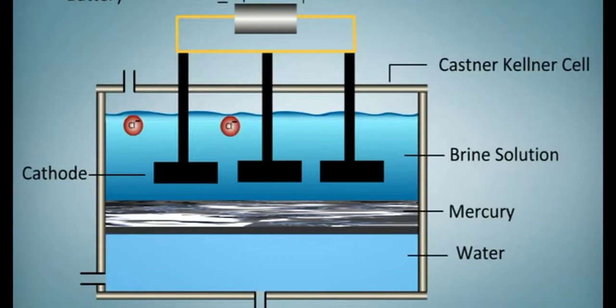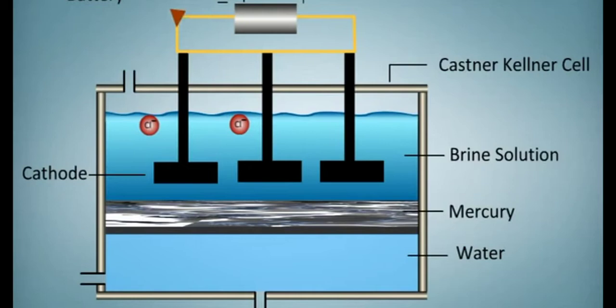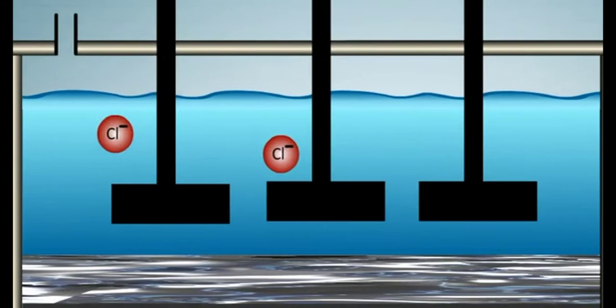When electric current is passed through the cell, the following reaction occurs. At anode, chloride ions are reduced to chlorine atoms by electrons.